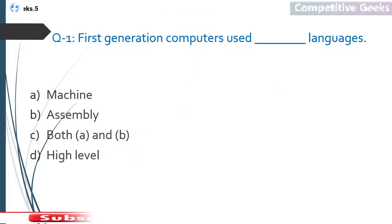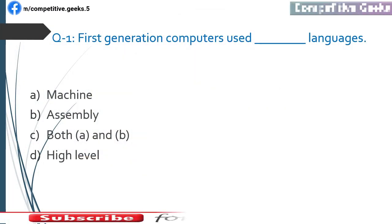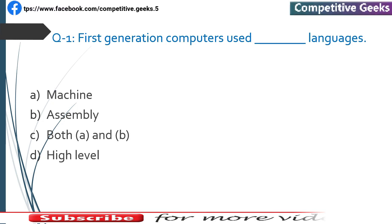First question: First generation computers used which language? The answer is A — Machine Language.